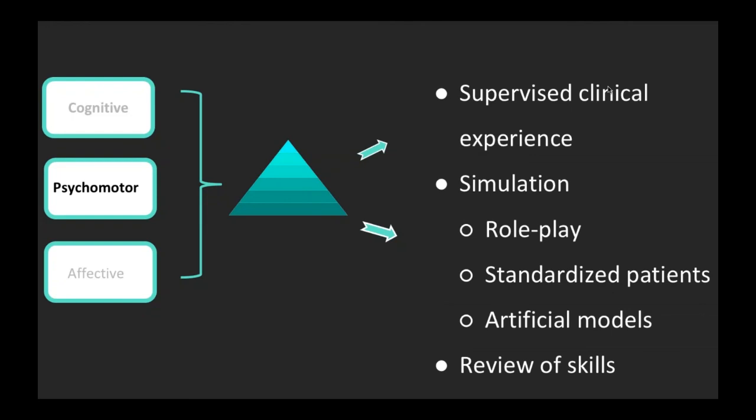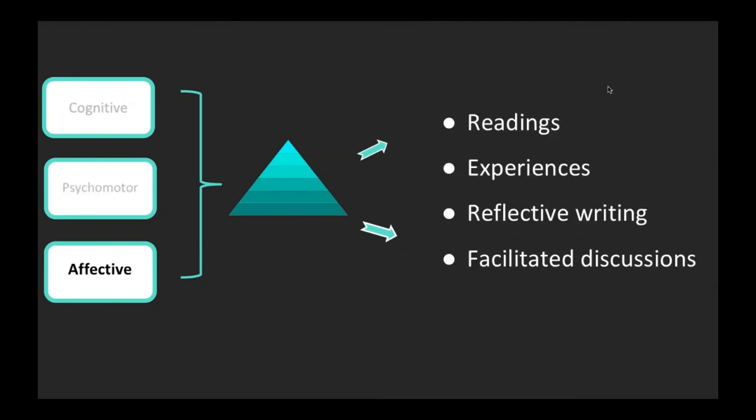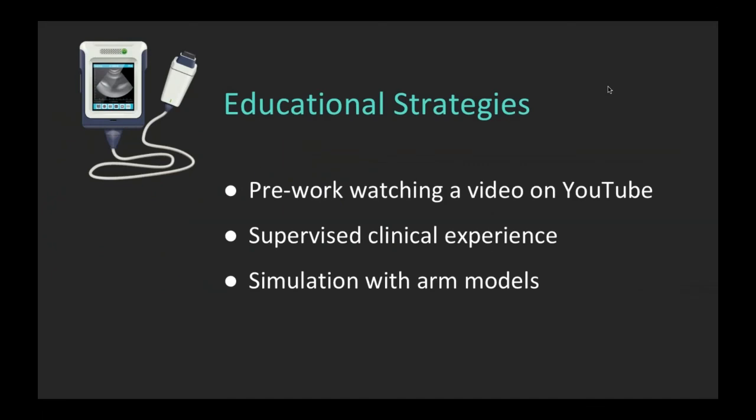If your objective is something from the cognitive domain, you consider strategies like readings, lectures, discussions, team-based learning, peer teaching. If you want learners just to recall facts, maybe readings are great. However, if you want them to apply these skills, maybe problem-based learning would be better. For psychomotor, you can expect direct clinical supervised experience, simulation, or review of skills. This domain is more affected by your resources available. For the affective domain, you consider readings, experiences, reflectives, or facilitated discussions. For our faculty development course, we want learners to watch a video before coming in, then do supervised clinical experience with live models, then move to simulation to practice ultrasound-guided IV placement.